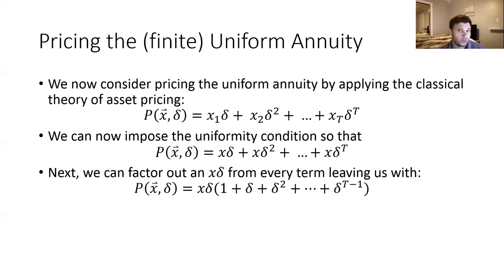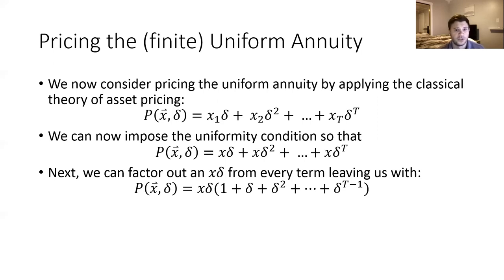When we do that, the first term we'll have left is just a one, and then we'll have a Delta plus another Delta squared, so on and so forth. So we wind up, after factoring out the X·Delta, getting what looks like a geometric series in the parentheses. At this point we're more or less done — we've found the pricing formula. If I told you X, T, and the discount rate so you could calculate Delta, you would plug them into this formula and that would give you the price of that cash flow stream.